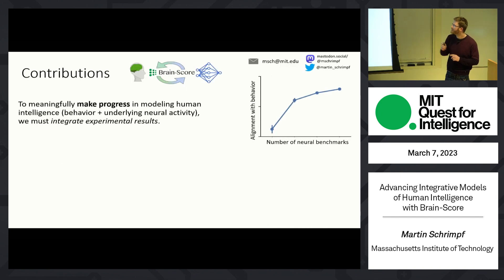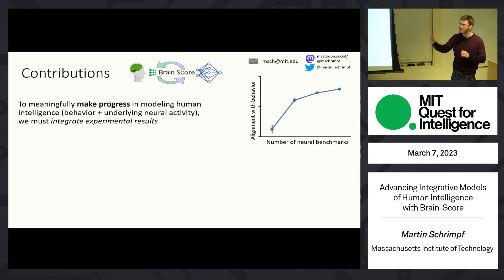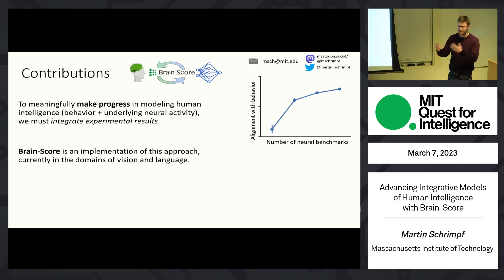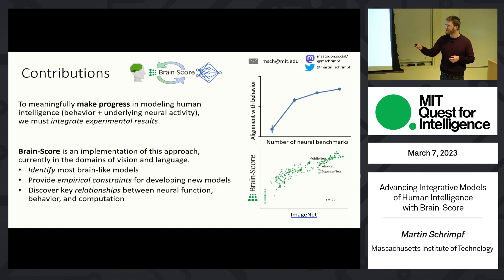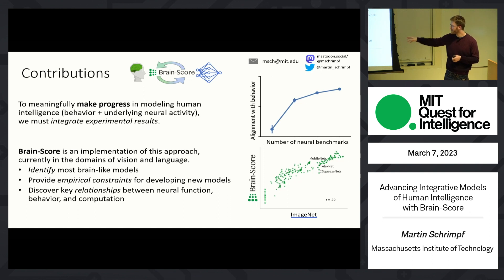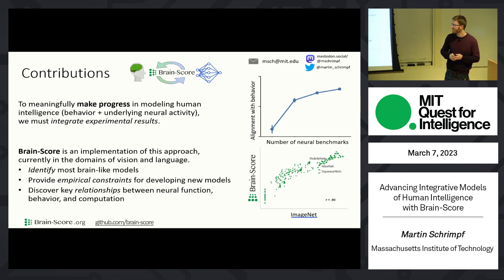So what I hope you can take away is that as we add more and more benchmarks together, that is going to enable us to make meaningful progress. BrainScore is one implementation of this approach — currently the largest-scale version in vision and language. It allows us to identify the most brain-like models, provide empirical constraints for new models, and discover relationships such as between object categorization and brain alignment, or next-word prediction and brain alignment. Everything is open source, and we could really use your help — Catherine is going to say more about that. Thank you.